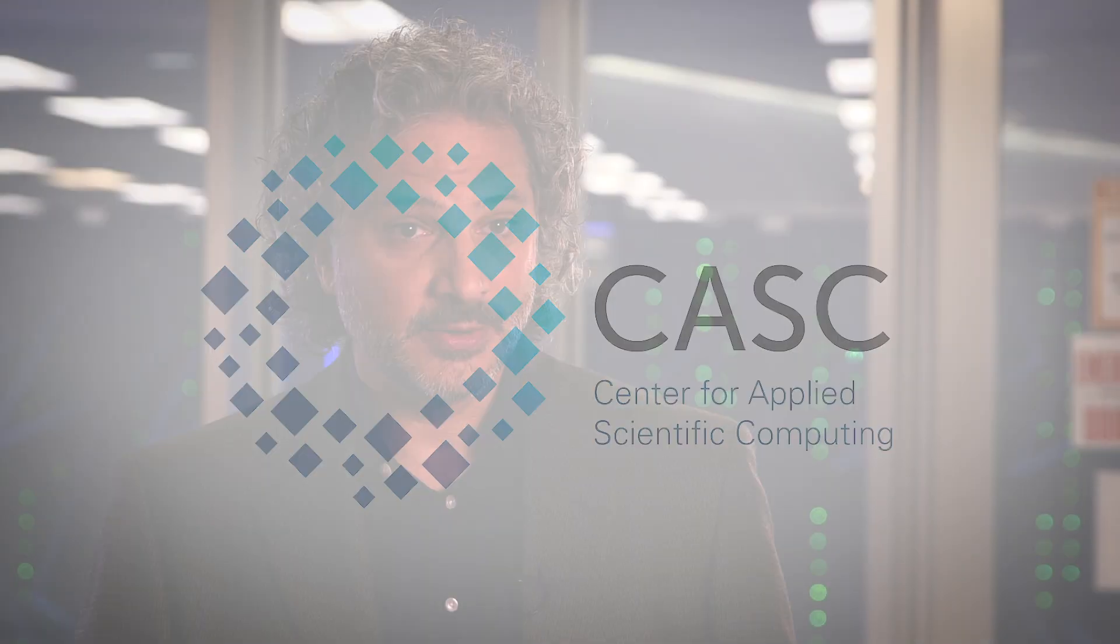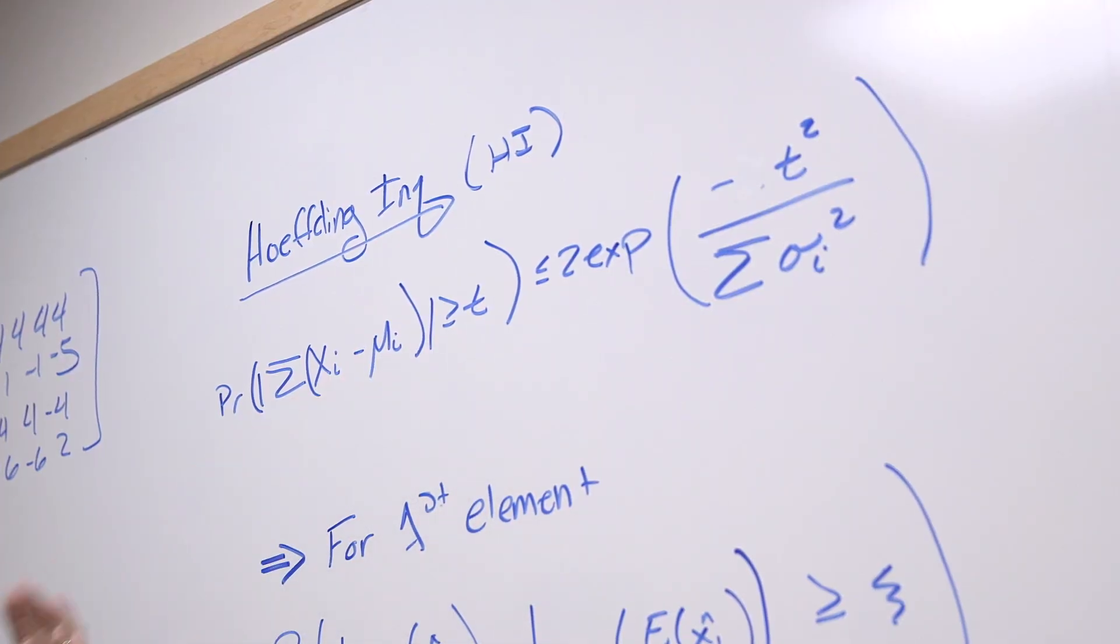CASC, or the Center for Applied Scientific Computing, is a research organization of approximately 125 mostly PhDs in applied mathematics, computer science, data science, and computational physics. And those different fields can work together and help devise new solutions to the problems we face.